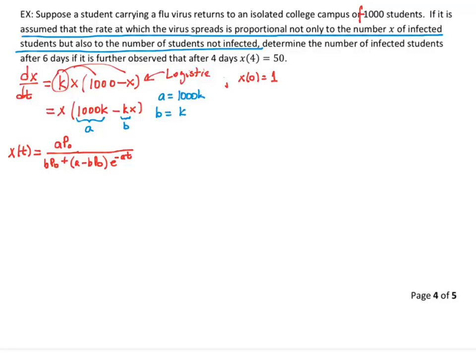Okay, so P0 in my model, or what I might call x0, but I've labeled as P0 in my equation that I just wrote, is 1. So I end up with, on top, 1,000 k divided by k plus 1,000 k, which is A, minus k, times e to the negative kt, which is, e to the at, which, say that right, e to the minus at is negative 1,000 kt.